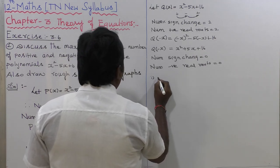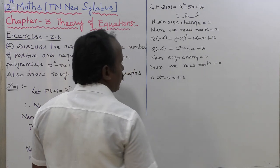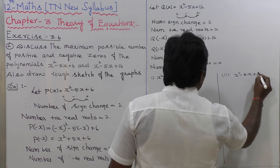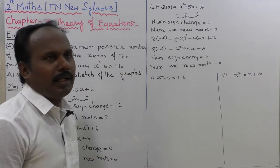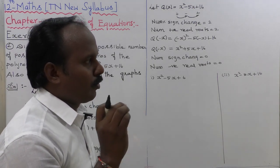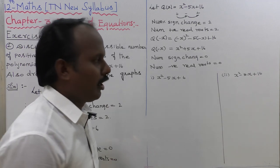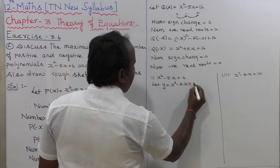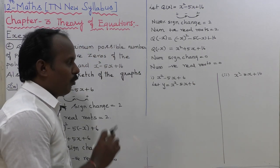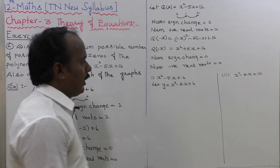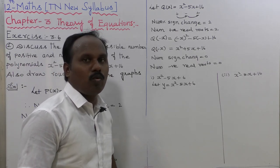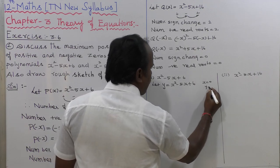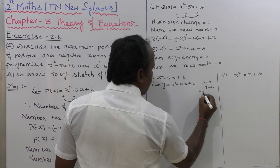Now we draw the graph. For the first question, p of x equals x squared minus 5x plus 6. We draw on a graph sheet from minus 4 to plus 4. We consider y equal to x squared minus 5x plus 6. The point of intersection: when x is equal to 0, y is equal to 6. When y is equal to 0, we solve the equation.